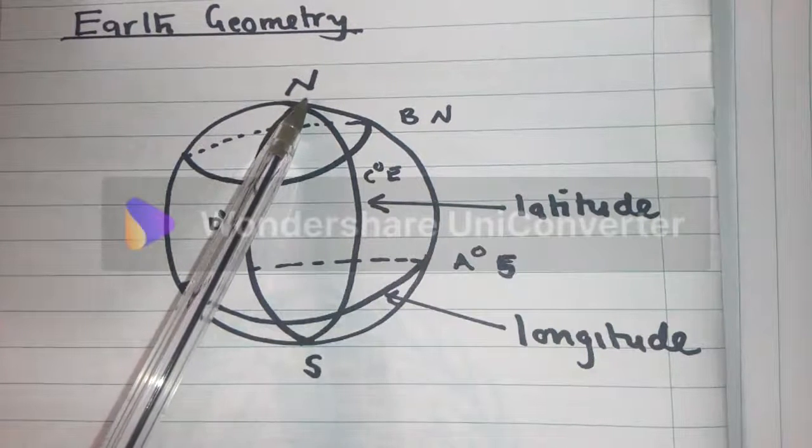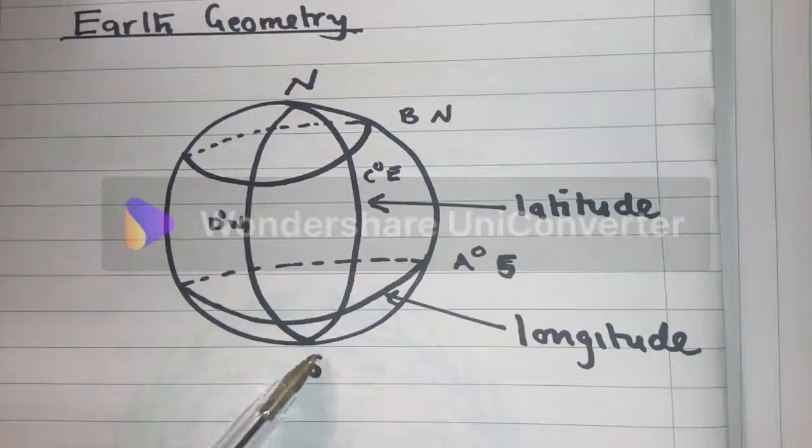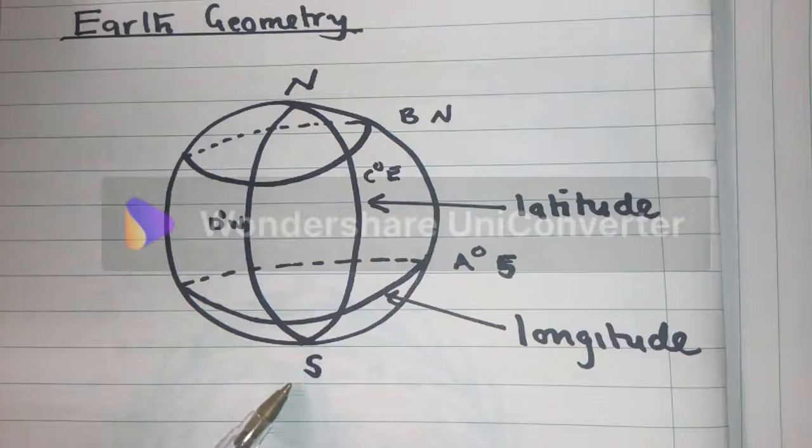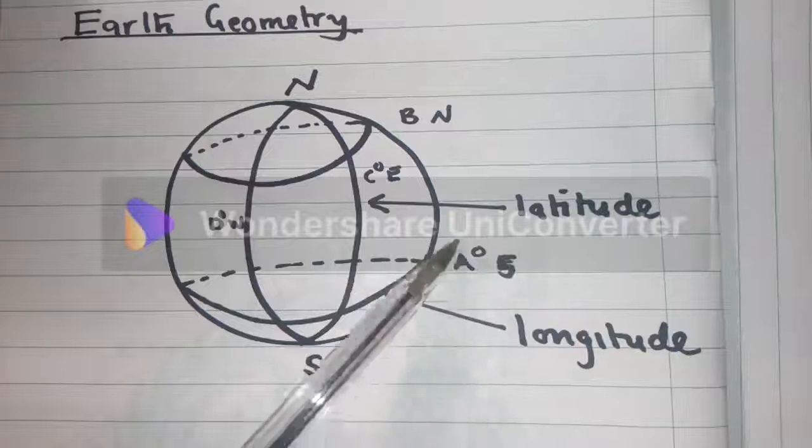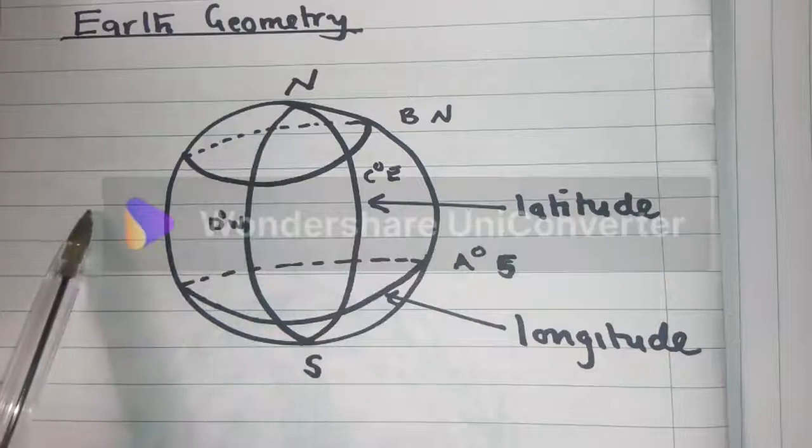Alright, so on top here there is an N which stands for North, and here is South. S stands for South. This side is East and this side is West.